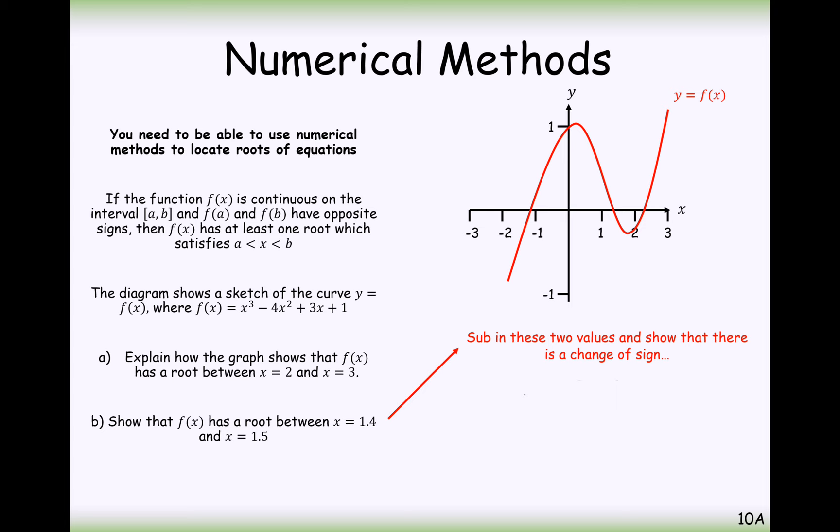The next question here is to show that F of X has a root in between 1.4 to 1.5. So we're going to need to sub in these two values and show that there is a change in sign. First, substituting in F of 1.4, substitute that straight into your calculator, and you get 0.104. Substitute in 1.5 into your function, and you get minus 0.125. So you can see here it's going from positive to negative, and as long as it goes from one sign to a different sign, then we have a root in between 1.4 to 1.5.